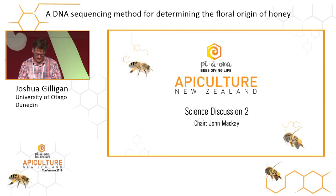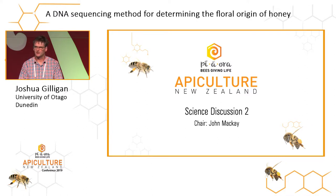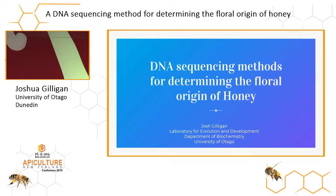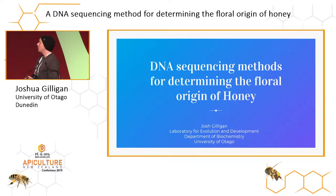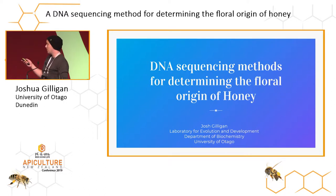Next up from the University of Otago, working with Andrew Cridge and Peter Dearden, is Joshua Gilligan. Josh is going to talk about a DNA sequencing method for determining the floral origin of honey. Hi everyone, I'm Josh from the Lab of Evolution and Development in the Biochemistry Department at the University of Otago, and that's what I'm going to talk about today.